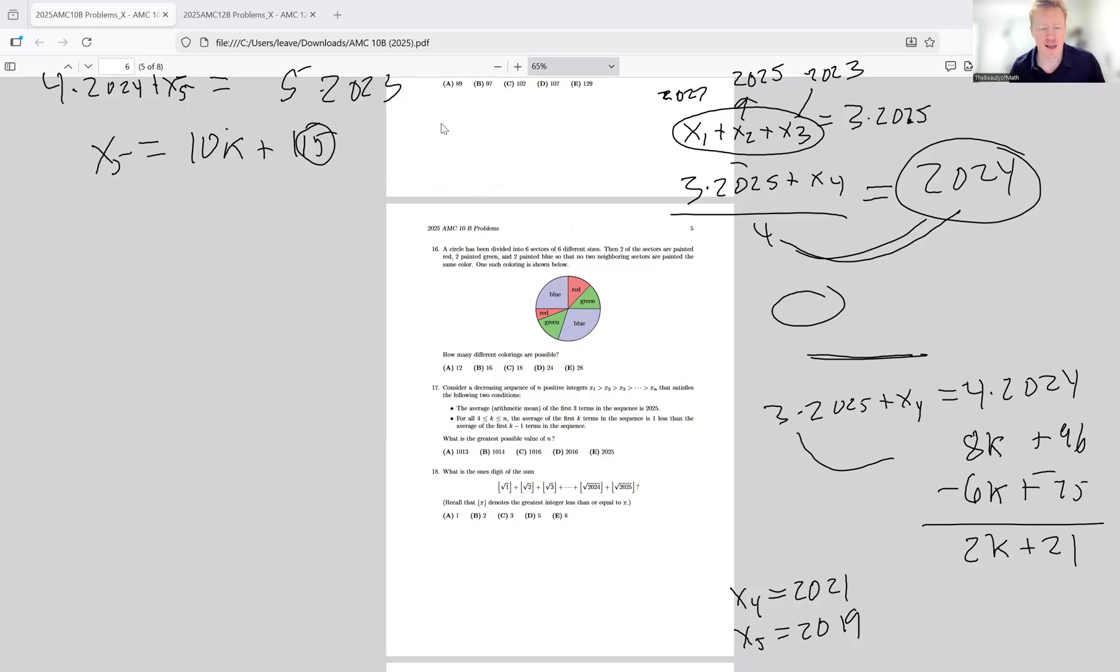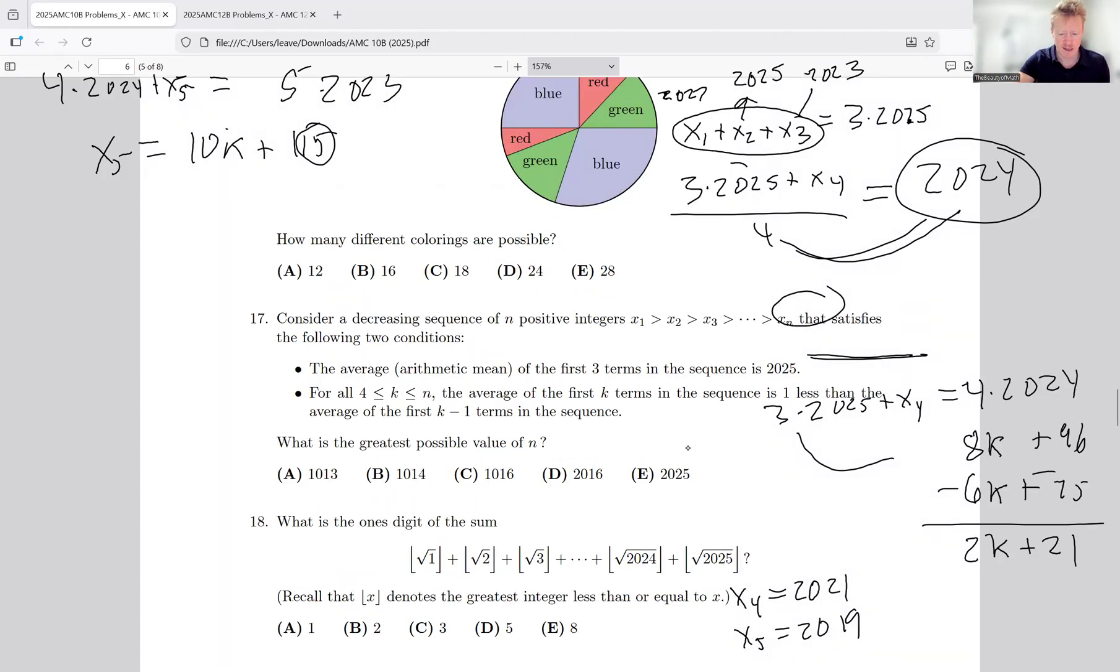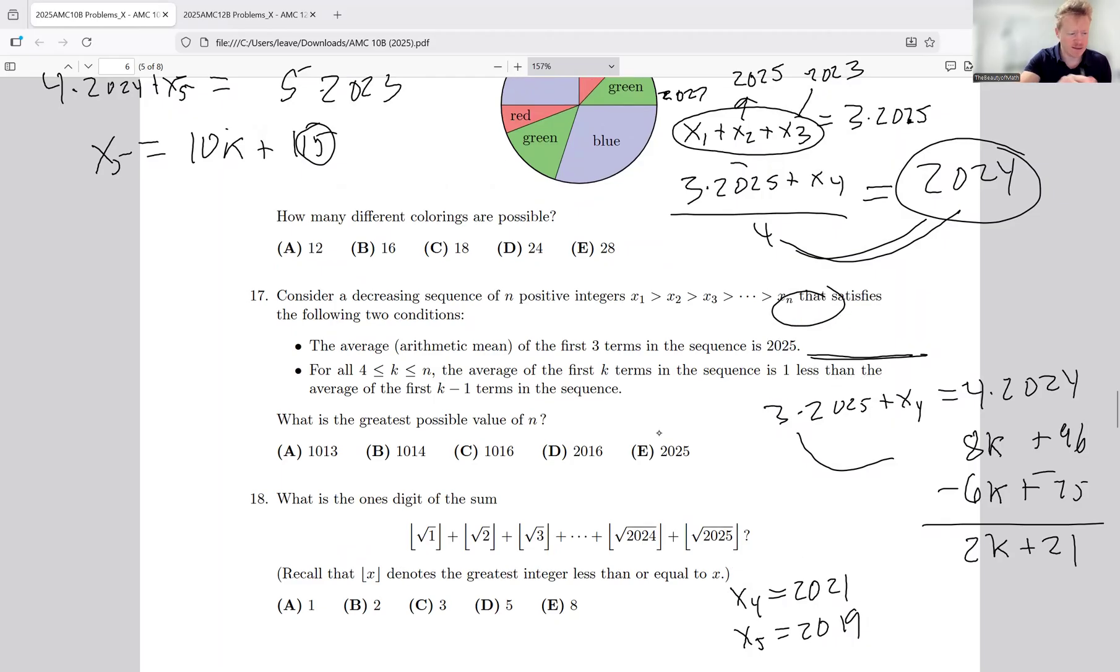Alright then, let's zoom back in on this problem here and we're going to clear this off and look at this really quick. So what is the greatest possible value of n?